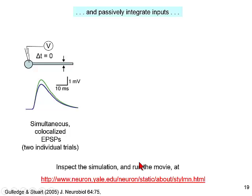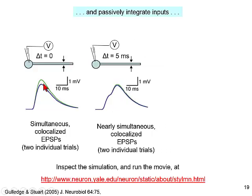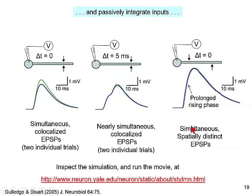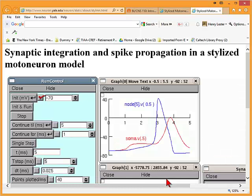With these concepts, dendrites passively integrate inputs without fancy sodium channels. If we have two simultaneous co-localized excitatory post-synaptic potentials, they each look similar individually; if they occur during the same trial, they can sum and might get over threshold when recorded in the cell body. If they occur simultaneously but at different places on the dendrite, they can also sum in the cell body with a slightly broader rising phase.